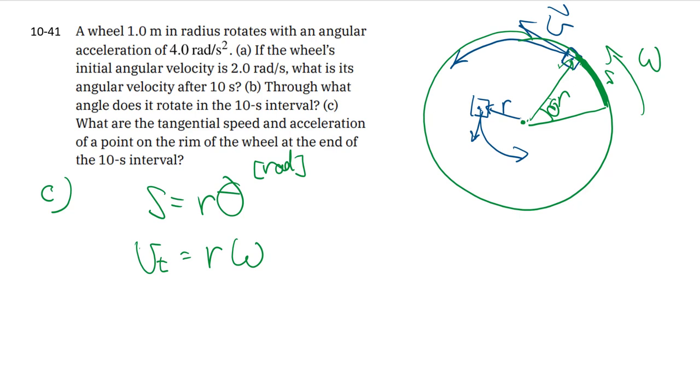So in particular, they're talking about at the end of this 10 second interval, the final tangential speed. Since they're talking about a point on the edge, the radius is the full radius of the wheel, which is 1.0 meters. And previously, we figured out the angular velocity to be 42 radians per second.